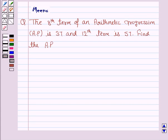Hello students, let's work out the following problem. It says the 8th term of an arithmetic progression (AP) is 37 and the 12th term is 57. Find the AP. So let's now move on to the solution.